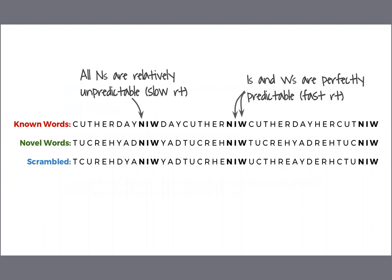Here are the main results. On the y-axis we are plotting response time in milliseconds, and on the x-axis is the number of times a participant has seen a letter — they saw each letter 72 times, and I'll call this variable 'time.' The three panels are for N on the left, I in the middle, and W on the right; colors represent different conditions. Each dot is the average for all participants for that letter in that condition at that time. One thing immediately apparent is that I and W are very different from N. For N, all three conditions show the same kind of learning curve — participants get a little faster over time, but nowhere near the improvement seen for I and W, especially in the red and green conditions.